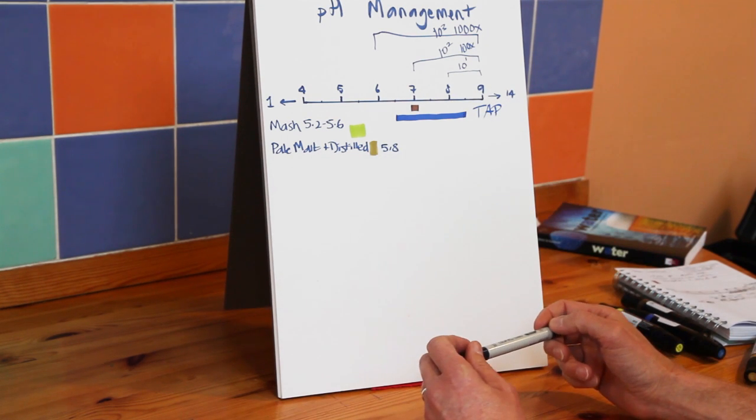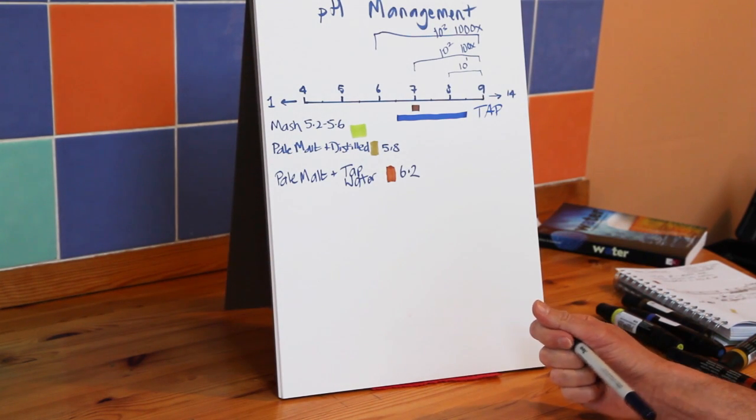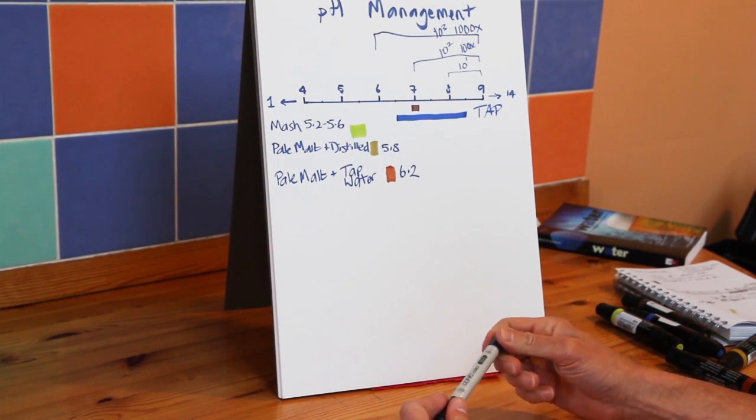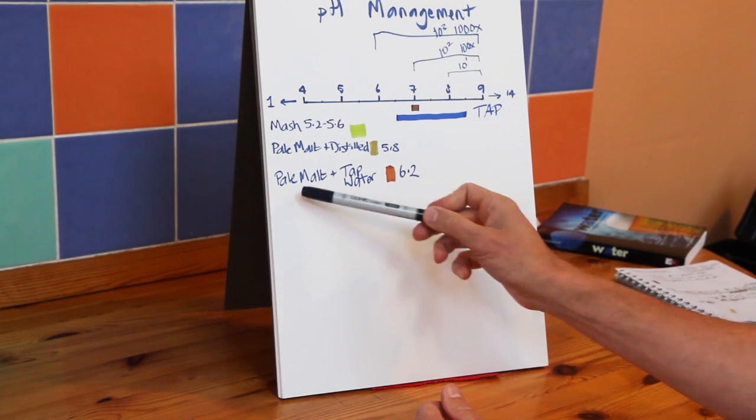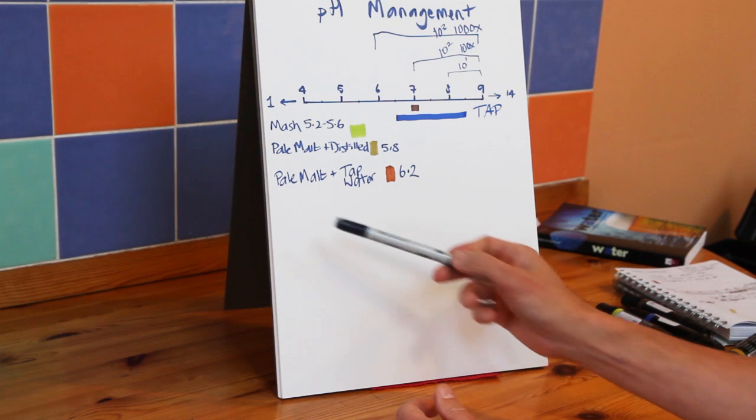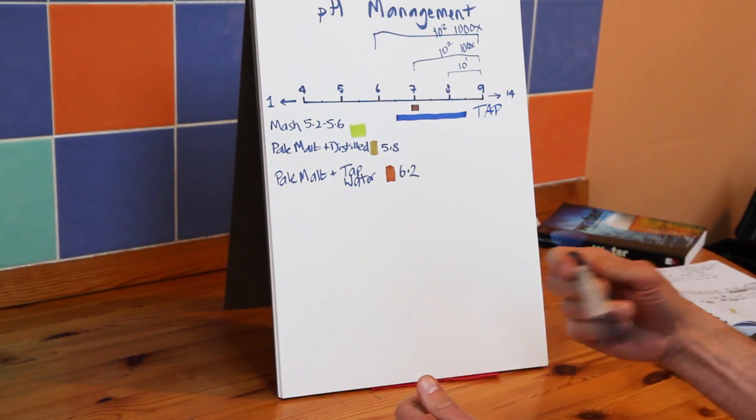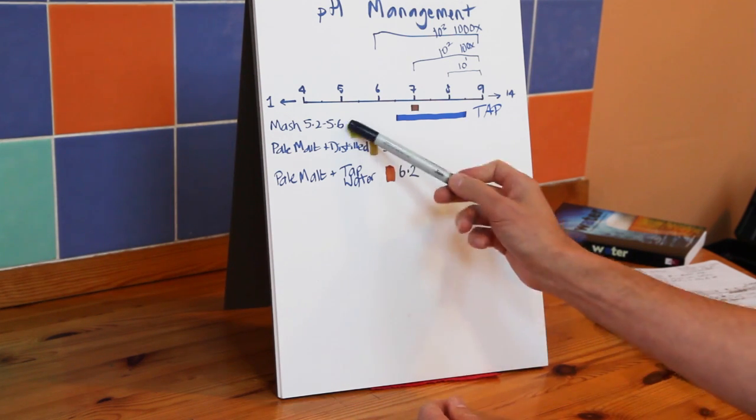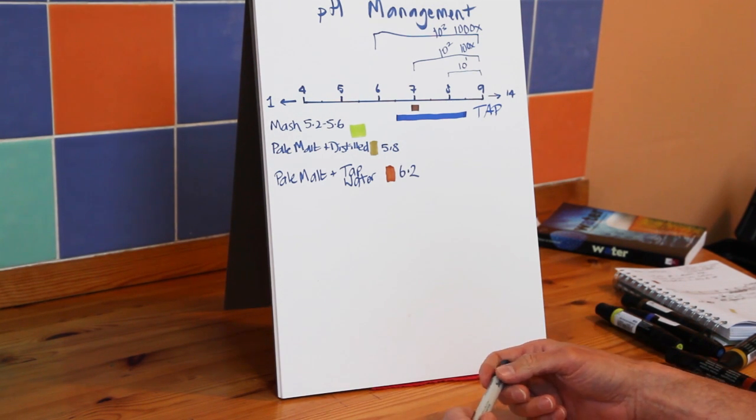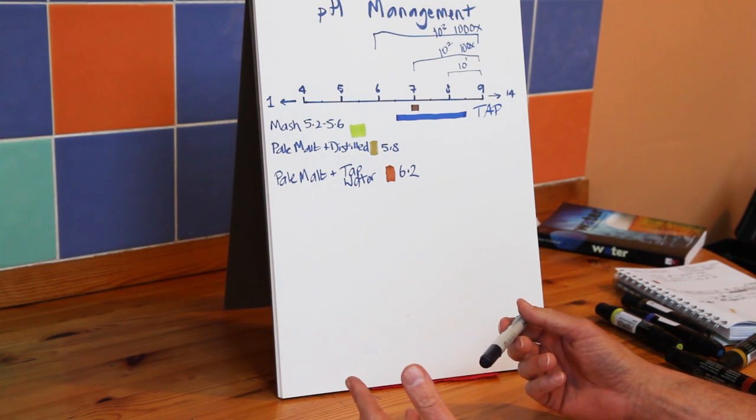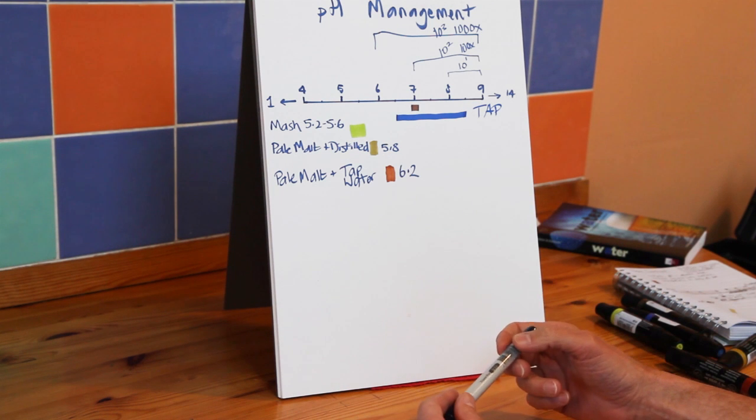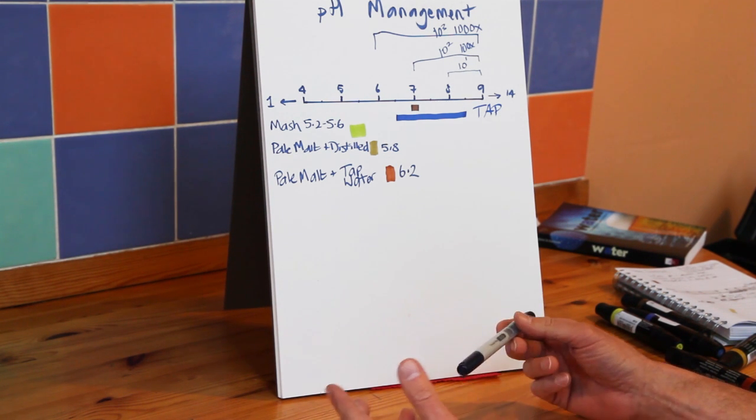If I take pale malt and mash it into my tap water rather than distilled water, then I've never done it, but according to my brewing water calculations, I will end up with a mash with a pH of 6.2. So if I'm mashed into distilled water I'll have a pH of 5.8. If I mash with my tap water, I'm going to get a pH of 6.2, which is well away from the 5.2 to 5.6 that we are trying to achieve. So why is that? You know, distilled water is at pH 7, my tap water actually is around pH 7 to 7.5, I think the last time I measured it. So why is that? Why am I not getting down to that degree of acidification that I would do with distilled water?